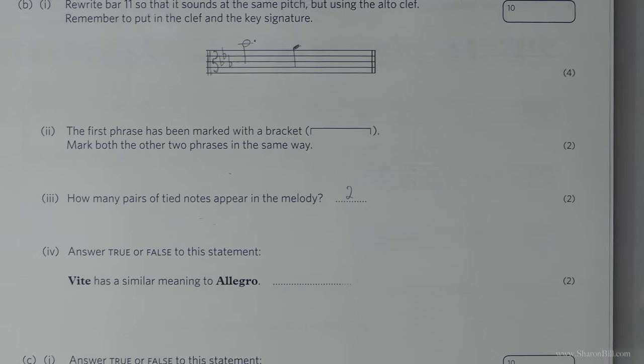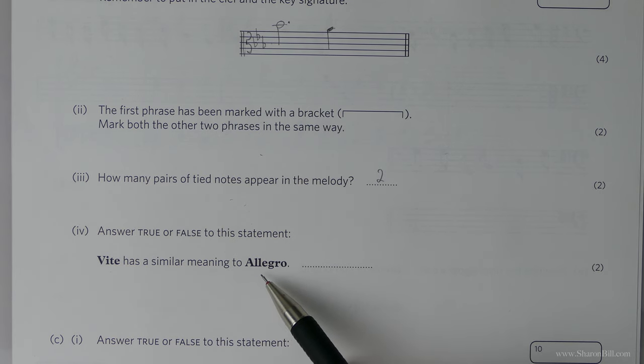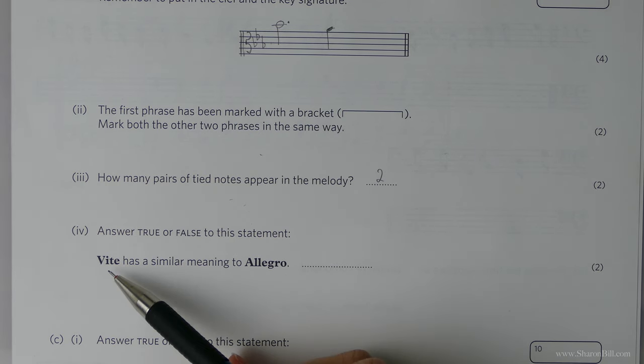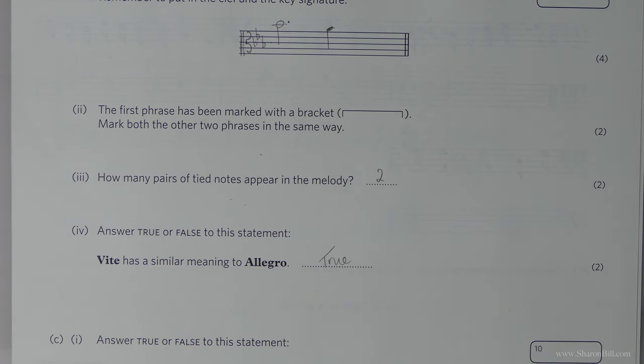Now we are asked to answer this. Is it true or false that vite has a similar meaning to allegro. Allegro means fast, so also does vite. That's true.